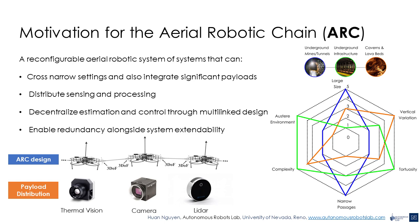The motivation of this design relates to the desired ability of the robot to traverse narrow environments, while simultaneously being able to carry a significant payload, or cooperatively exploit the thrust vectoring of every ARC unit towards aerial manipulation. This design also offers the potential for distributed sensing and processing, decentralized estimation and control, as well as system redundancy. Applications include using the robot as a flying snake to navigate narrow environments to detect victims of disasters, or to carry a wide range of sensors for industrial inspection — such as thermal vision, cameras, and lidar — while maintaining a narrow cross-section.